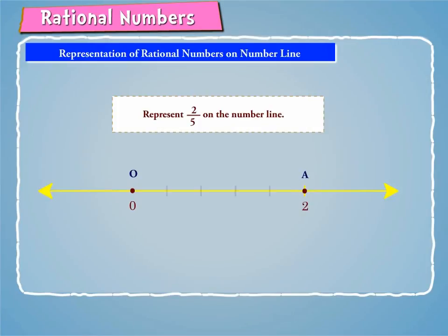Divide OA into 5 equal parts at P, Q, R and S as shown on screen. Here, the point P represents the rational number 2 by 5.